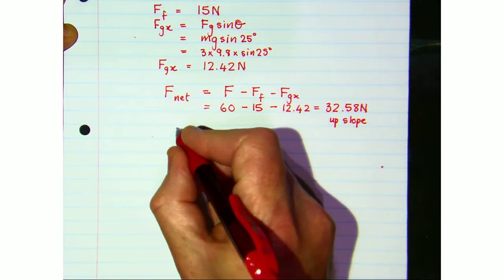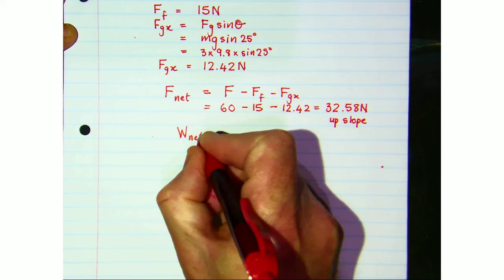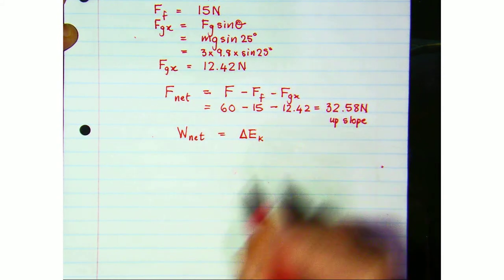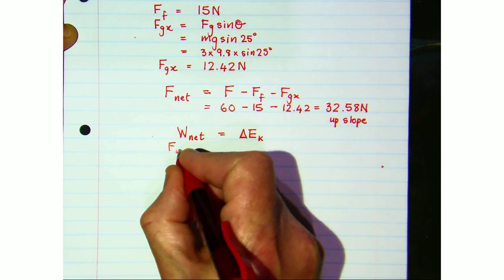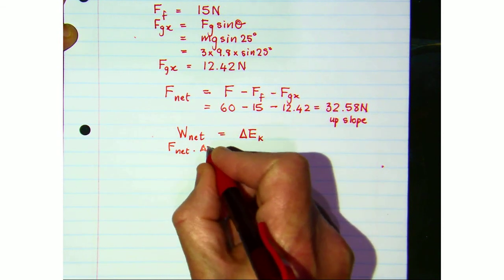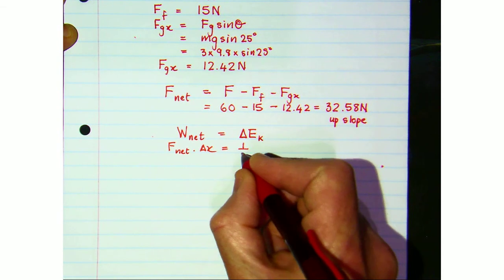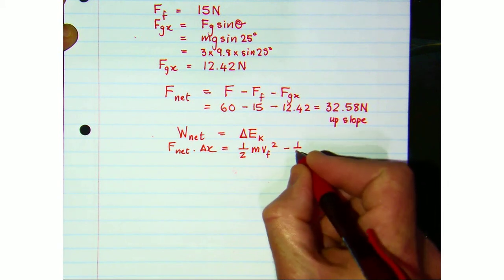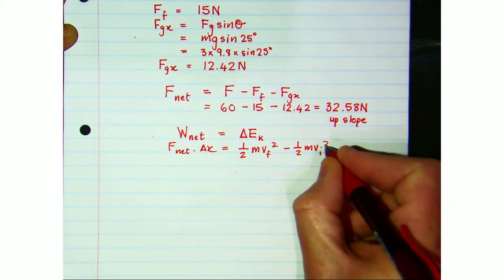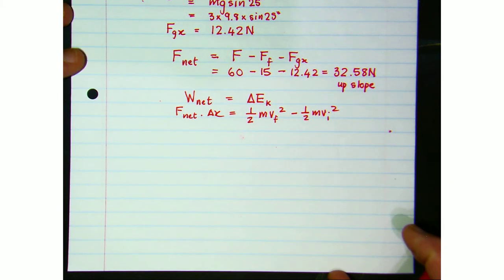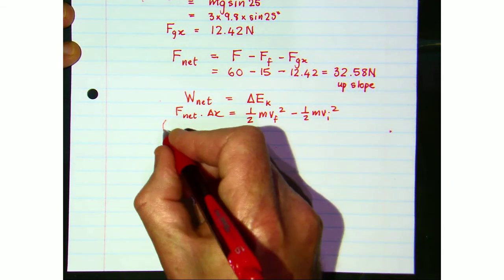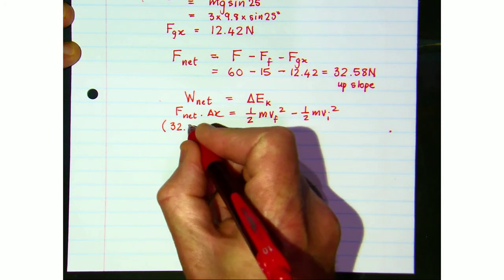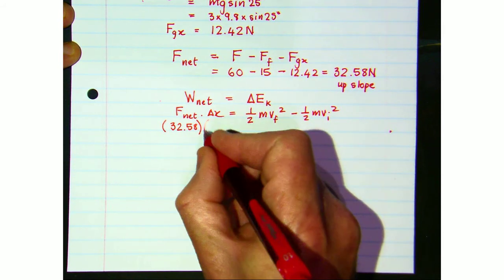So let's go to the work-energy theorem now. That's straight off the data sheet. Left-hand side: net force multiplied by the displacement. Right-hand side is the difference in kinetic energies, final minus initial. And then it's just a case of putting in the numbers. The net force was 32.58, the displacement up the ramp was 4 meters.